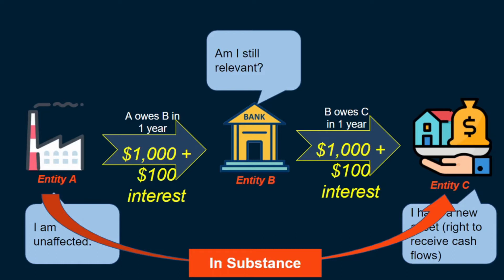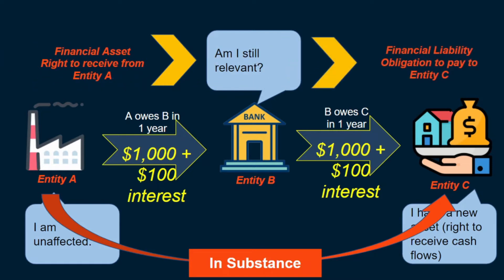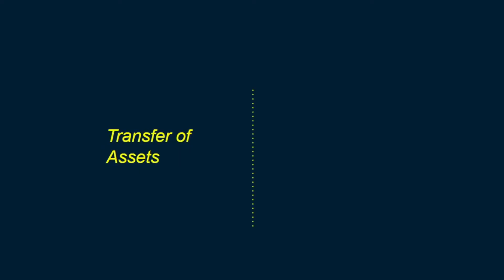Because contractually, the right to receive cash flows from entity A still exists in form. The short and sweet answer is: it depends. Practically, transfer of financial assets happen all the time, especially in the financial sector. It may be in the form of debt factoring, or it may be in the form of securitization of loan portfolios.